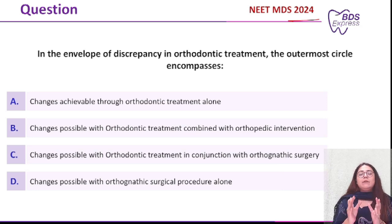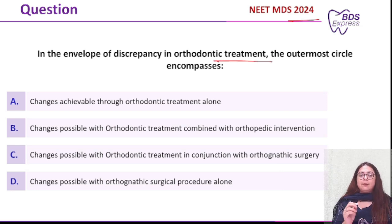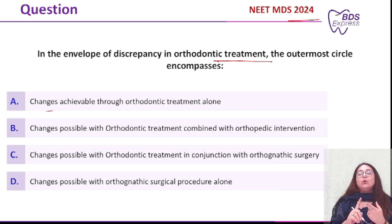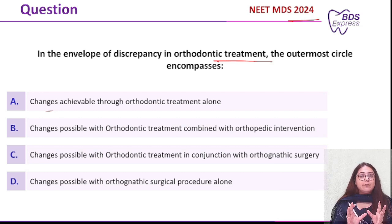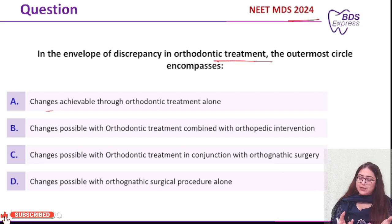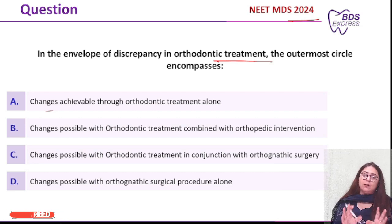The question: In the envelope of discrepancy in ortho treatment, the outermost circle encompasses — options given were: A) changes achievable only through ortho treatment, B) changes achievable through ortho treatment plus orthopedic intervention, C) changes achievable through ortho treatment along with orthognathic surgery, D) achievable only through surgery alone.